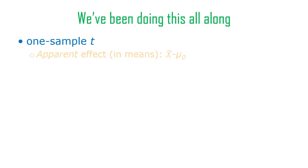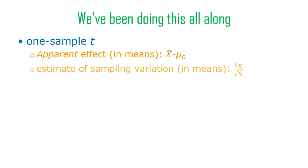We've been doing this the whole time. With the one-sample t, there's always an apparent effect — apparent because we don't know if it's a real effect since it's just in the sample. Our sample mean minus mu zero: the difference between our sample mean and the null hypothesis implied mean, that's the apparent effect. The estimate of sampling variation is the standard error of the mean, which is the standard deviation of the raw scores divided by the square root of n.